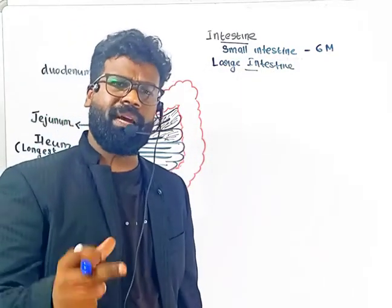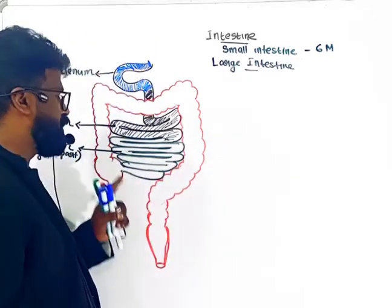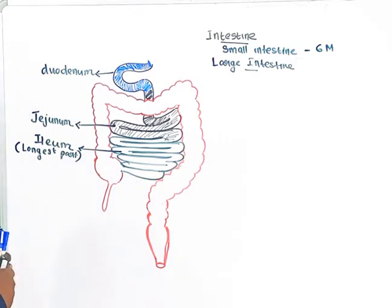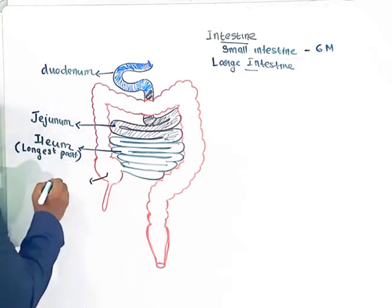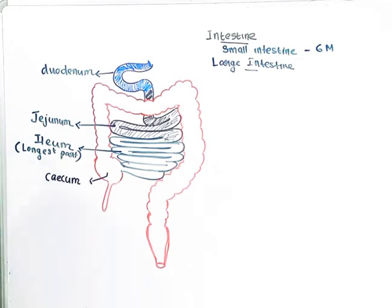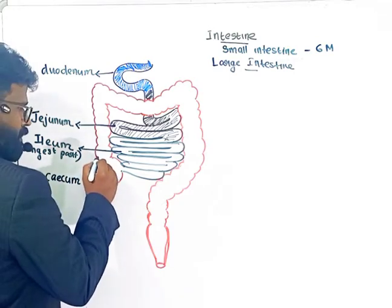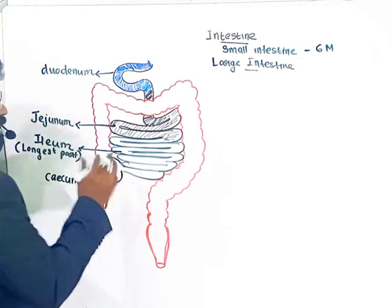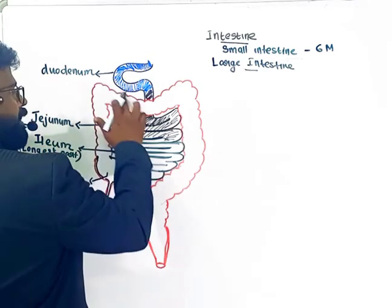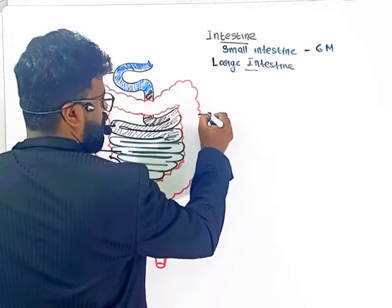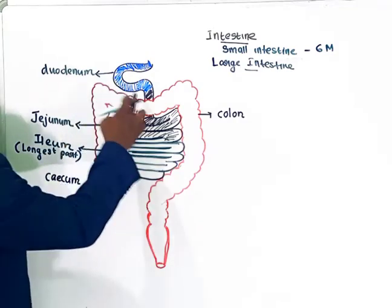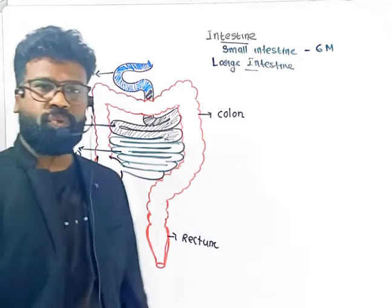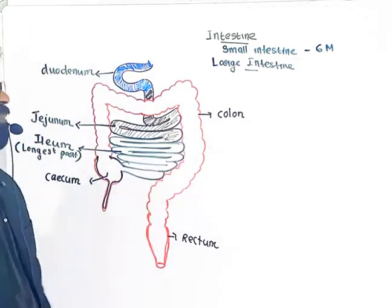Like the small intestine, the large intestine also has three regions. The three regions of the large intestine are: first, cecum; second, colon — which is the longest portion; and third, rectum.